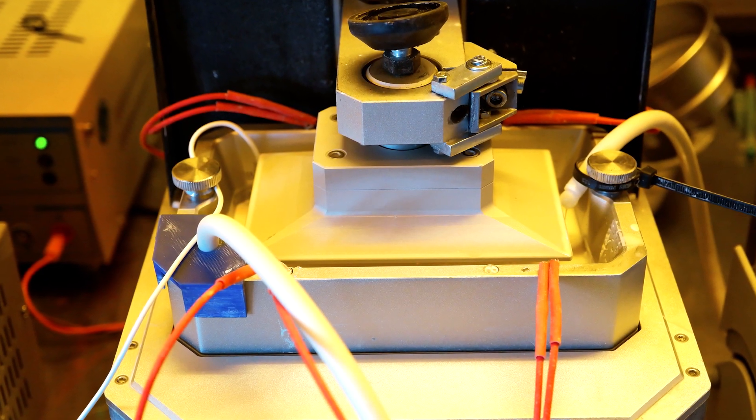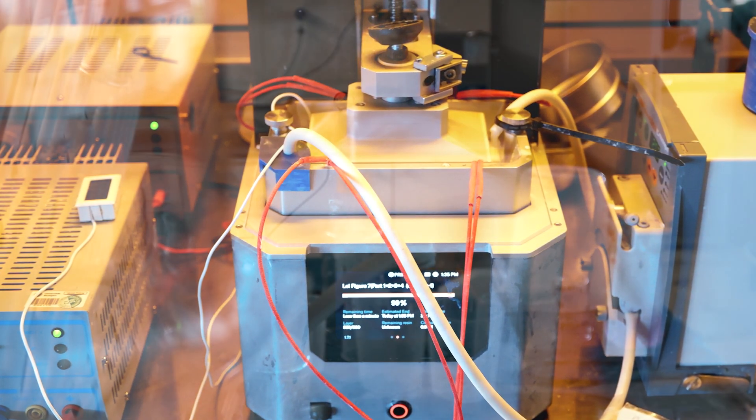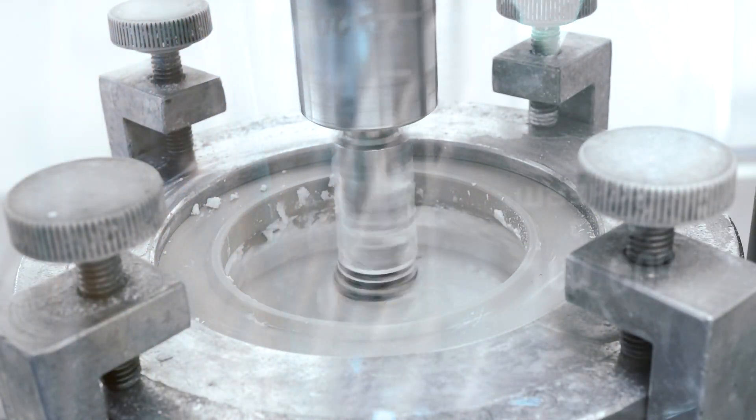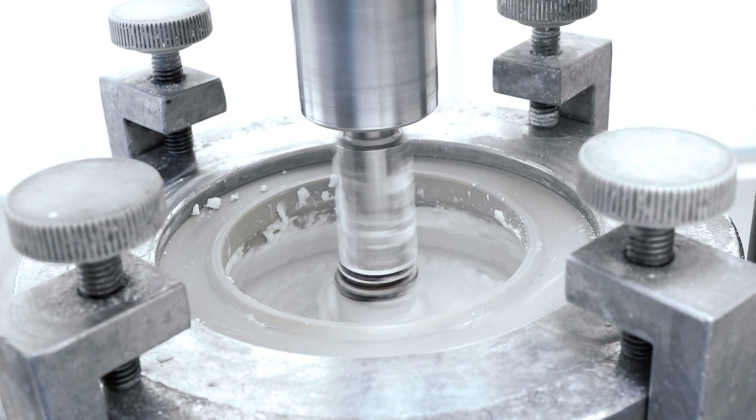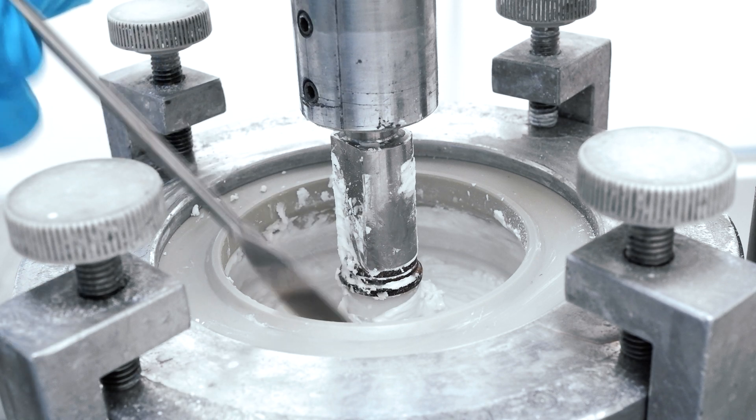Now, even though we have all these sophisticated equipment, we still rely on chemistry, basic organic chemistry, to create a ceramic filled resin that can actually be printed. For example, this is a resin in the making. Check this out.